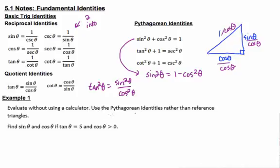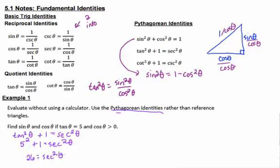Example one, evaluate without using a calculator. Use the Pythagorean identities rather than reference triangles. We've seen this kind of problem and we've done reference triangles to do it, but now we're going to instead say, well, we've got these identities we know to be true. Let's use those instead. They tell us that tangent theta equals five and that cosine has to be positive. And so if we want, if we have tangent, we're basically stuck using this Pythagorean identity right here that has a tangent in it. So we have to square both sides. So tangent squared of theta, this is the identity we're going to use. So we're going to put in a five right here where tangent theta is five squared plus one equals secant squared theta.